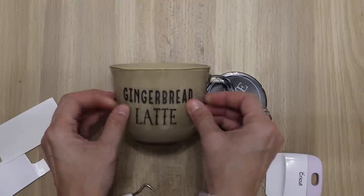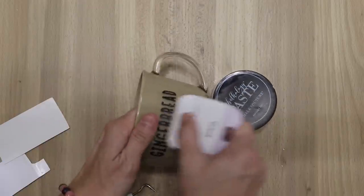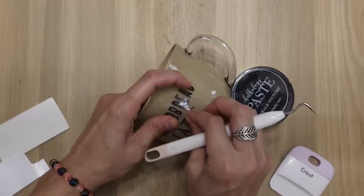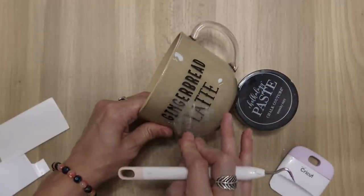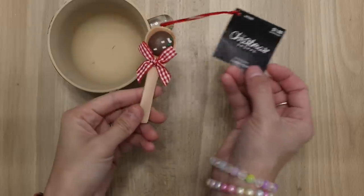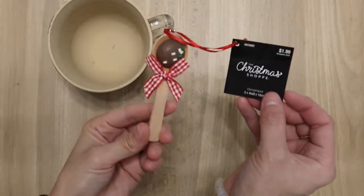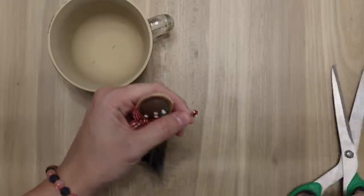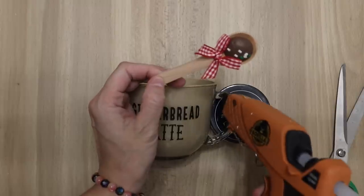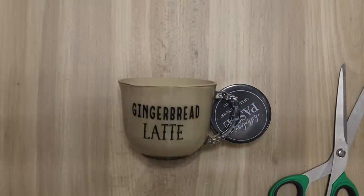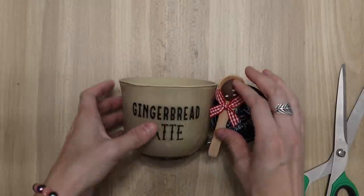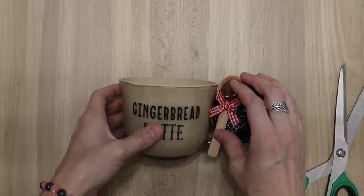I am just adding this little decal to the front of the mug. It says gingerbread latte, hence why I added some gingerbreads to the top. I am really obsessed with using all of these fake sprinkles and puffy paints. I also picked up this little ornament from Hobby Lobby. It was only a dollar, it was 50% off.